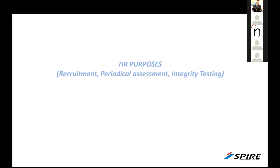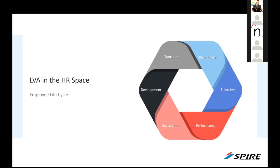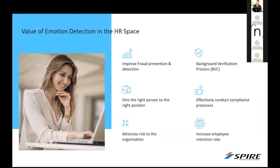LVA in the HR space is responsible for managing the employee life cycle — from recruiting, hiring, onboarding, and training to firing employees. LVA acts as a unique decision-making supporting tool for each stage, whether for assessing the potential risk of a new employee, revealing inappropriate or illegal activity of a current employee, or detecting general mood and compliance with company values. It helps improve fraud prevention and detection through time-efficient background checks, pre-employment screening, and deep interviews. It also matches the right person for a specific position by matching their professional emotional profile, strengths, and weaknesses, and increases employee retention by evaluating emotional well-being and conducting anonymous emotional satisfaction surveys.